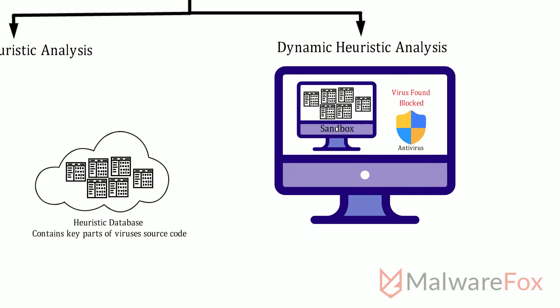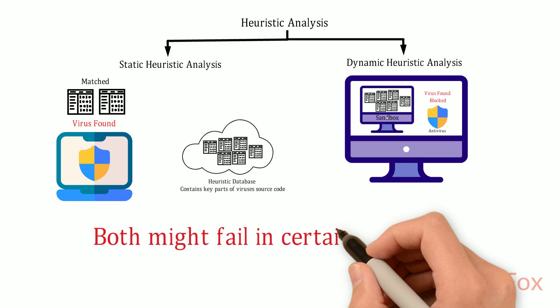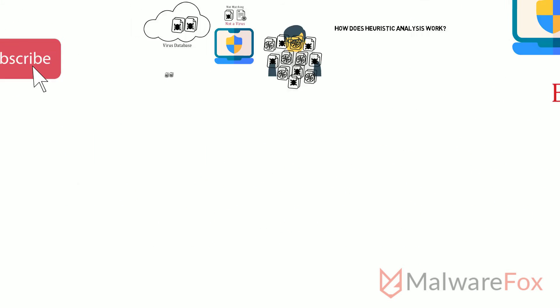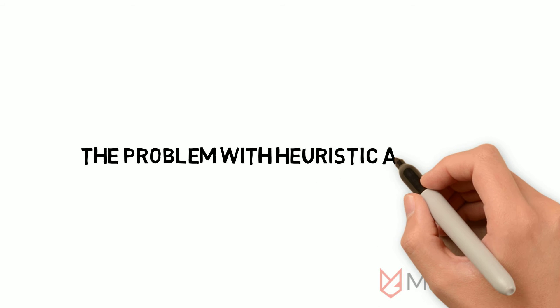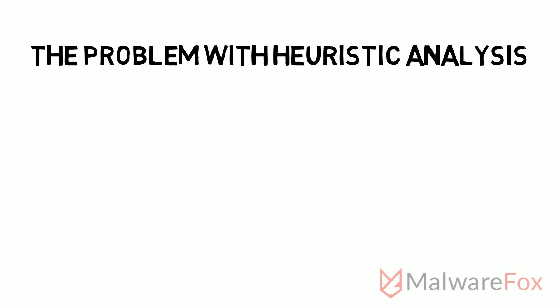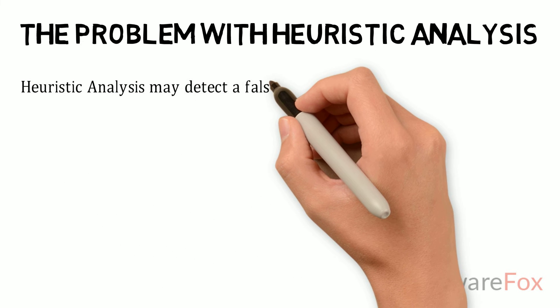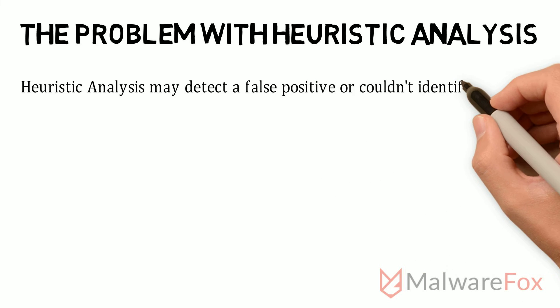Antivirus uses both static and dynamic heuristic methods to catch threats efficiently. However, there are times when it fails. The heuristic analysis gives the ability to catch new threats without relying on manual updating of the signature database. However, it is not always correct — there are situations where heuristic analysis may detect a false positive or couldn't identify a threat.